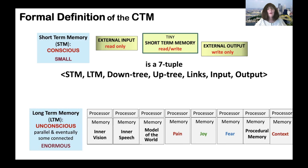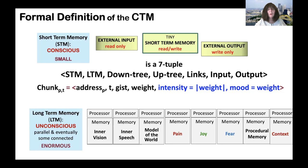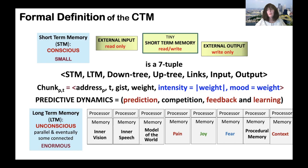We can formally define the CTM as a seven-tuple: STM, LTM, down-tree, up-tree, links, input, output. We define the chunk formally as a six-tuple. We talk about predictive dynamics — prediction, competition, feedback, and learning — as part of the formal definition of the CTM.